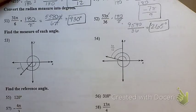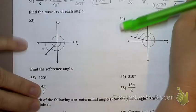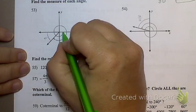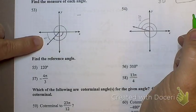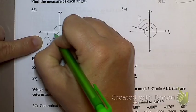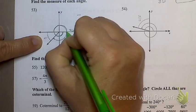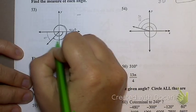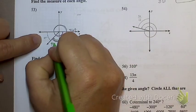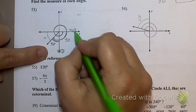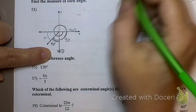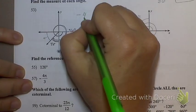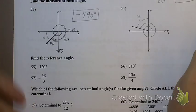Now we start getting into the circle stuff. Find the measure of each angle. Is this a positive or a negative angle? Negative — because it's starting off going down. So I know my answer is going to be negative. This is in degrees. It is more than one revolution — 360 degrees. Another 90 degrees would be 450. And then another 45 degrees, because those two together have to equal 90. So 360 plus 90 is 450, plus 45 is 495. That's negative 495 degrees.